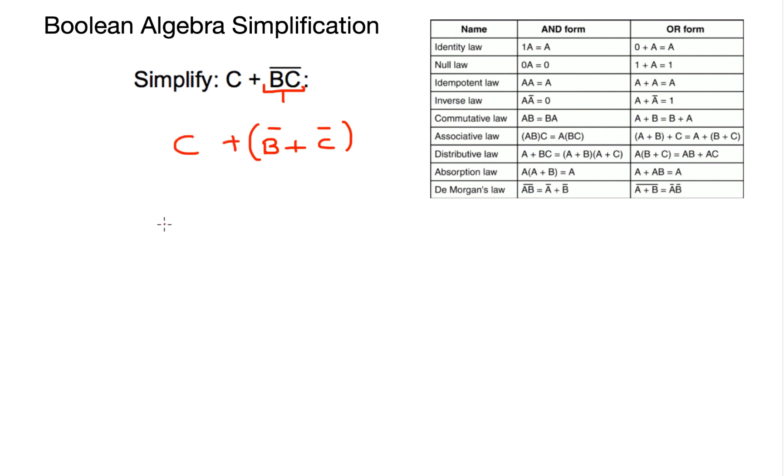So I've broken the bar here, the main bar at the top of B and C, and I've changed the sign from an and sign to an or sign. So where do we go from here?